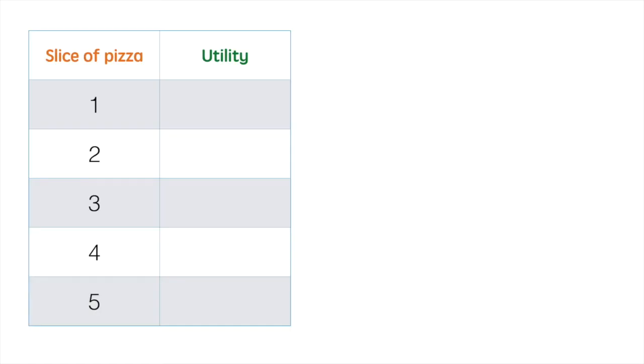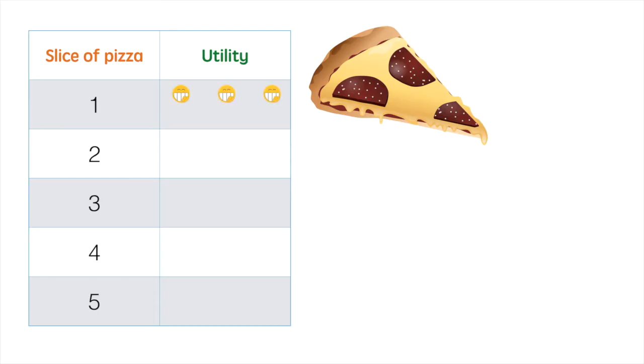The common example that I use in class is pizza. Whenever I order pizza, I know that when the doorbell rings and the pizza is delivered, I'm about to consume as much as I can. The first slice is always the best one for me. The consumption of the first slice brings me a utility of 9 on a 1 to 10 scale.